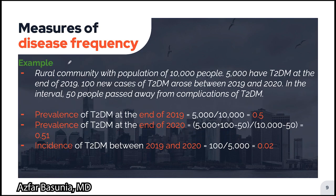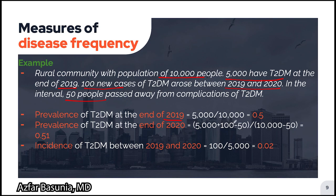Let's run through a quick example. Suppose we have a rural community with a population of 10,000 people, among whom 5,000 have type 2 diabetes at the end of 2019. There are 100 new cases of type 2 diabetes that arose between 2019 and 2020, and in the same one-year interval around 50 people passed away from complications of type 2 diabetes. The first question asks us to calculate the prevalence at the end of 2019: 5,000 divided by 10,000, which is 0.5 or 50%. The prevalence at the end of 2020 is 5,050 divided by 9,950, which equals approximately 0.51 or 51%. Thus, the prevalence actually went up in 2020 compared to 2019.